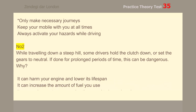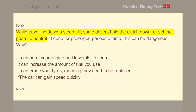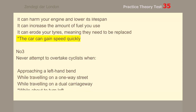Number 2. While traveling down a steep hill, some drivers hold the clutch down or set the gears to neutral. If done for prolonged periods of time, this can be dangerous. Why? The car can gain speed quickly.